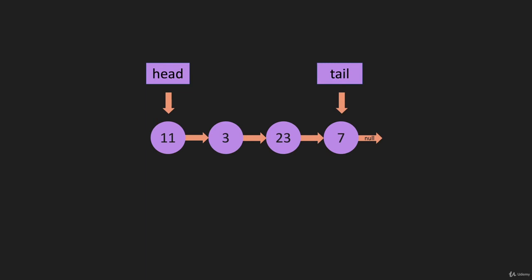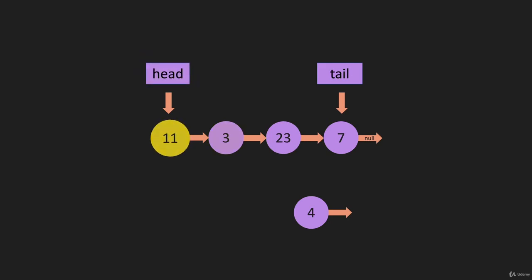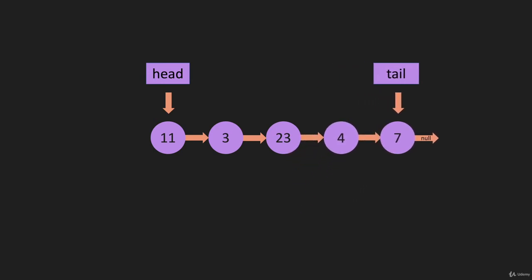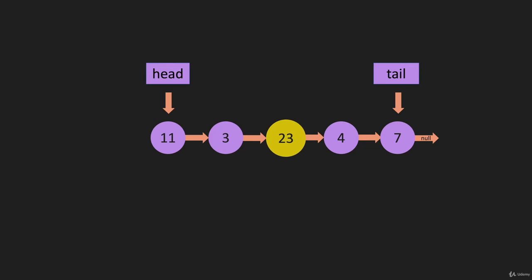Now let's look at inserting something into the middle. If we're going to insert the four node at index three — after the node at index two — we have to start at the head and iterate through to get to that point. We set the four to point to the same node the 23 is pointing to, then we have 23 point to the new node, and it's inserted. But because we had to start at the head and iterate through the list to get to the insertion point, this is O(n).